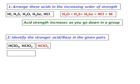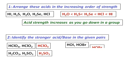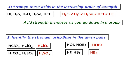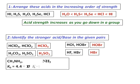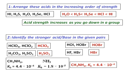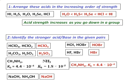For H₂CO₃ vs H₂SO₃, the central atoms differ, so we consider electronegativity. Sulfur is more electronegative than carbon, so H₂SO₃ is stronger. For HOI vs HOBr, different central atoms again: Br is more electronegative than I, so HOBr is stronger than HOI. For HF vs HBr, it's an HA-type acid and strength increases going down the group, so HBr is stronger than HF. For CH₃NH₂ vs ammonia, the Kb of methylamine is larger than that of ammonia, so methylamine is a stronger base. For NaOH vs NH₄OH, NaOH is a strong base, so NaOH is definitely stronger.